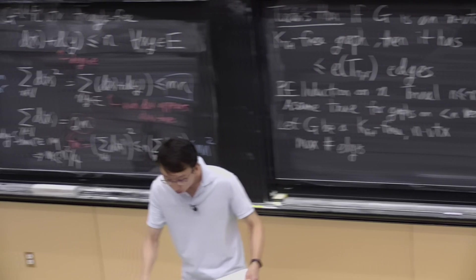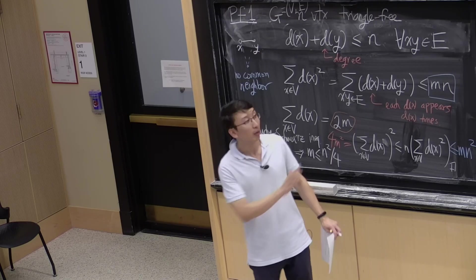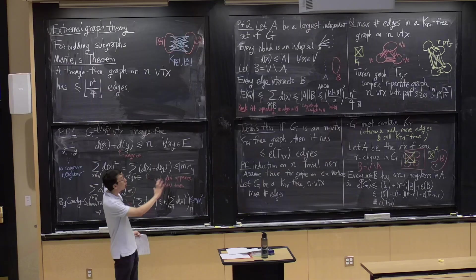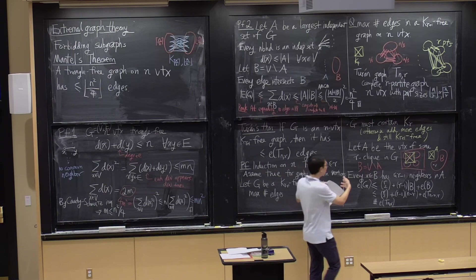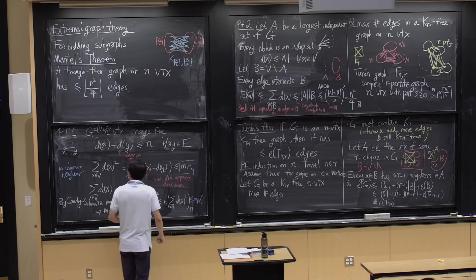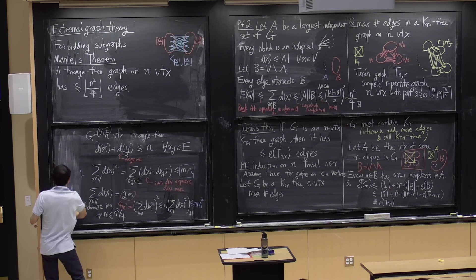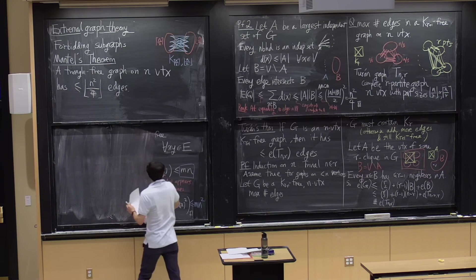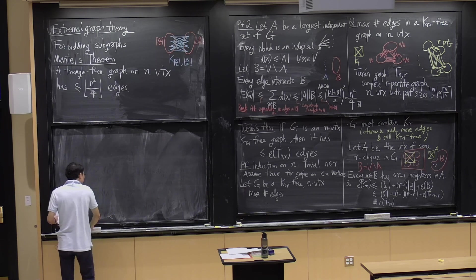I want to give you a third proof that has a somewhat different flavor. These two proofs are both somewhat combinatorial — either picking a clique and arguing what happens outside it, or looking at a maximal example. The third proof is more of a probabilistic proof, highlighting the probabilistic method in combinatorics: we start with a problem that has no randomness, but we introduce some randomness to make the problem amenable. It's a very pretty idea.